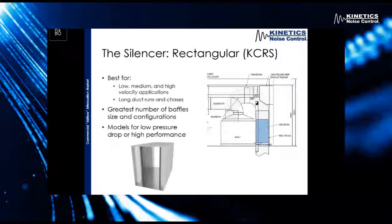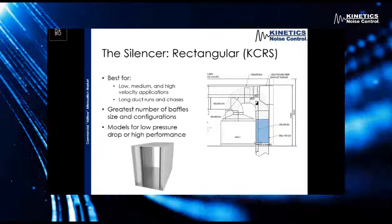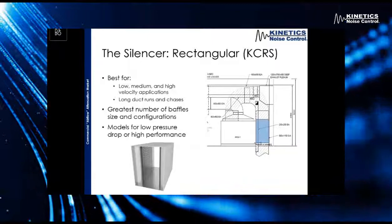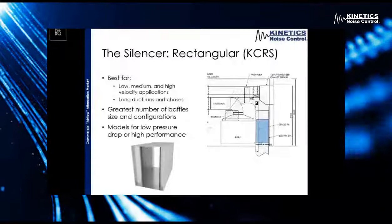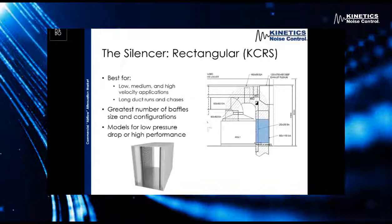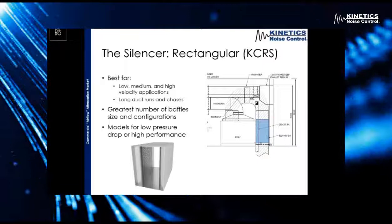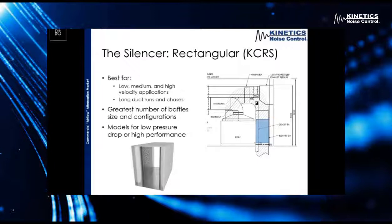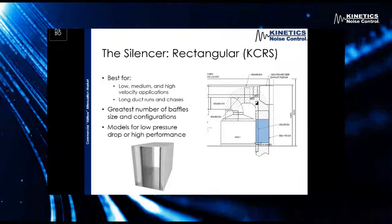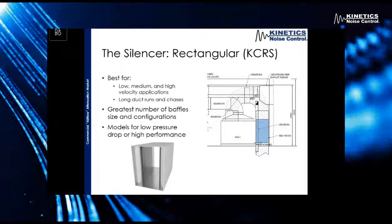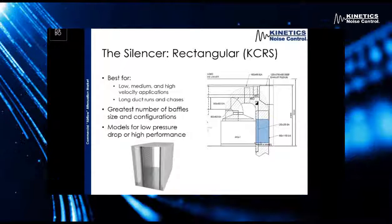We have three different standard types of silencers. The first is rectangular — this one is by far the most versatile. When it comes to the baffles inside a rectangular silencer, we have the greatest versatility in the size and configurations of baffles we can use. The configuration becomes important because we can start tuning our silencers to be good for low, mid, or high frequency noise. Rectangular silencers can also be made well suited for low, medium, and high velocity applications, giving us a good balance of acoustic performance — insertion loss and pressure drop. These silencers are really good for long duct runs or chases, places where you'll actually start seeing those ideal system effect conditions.